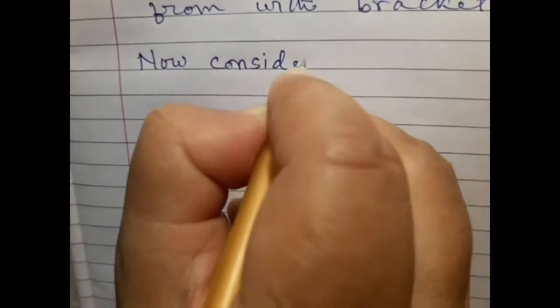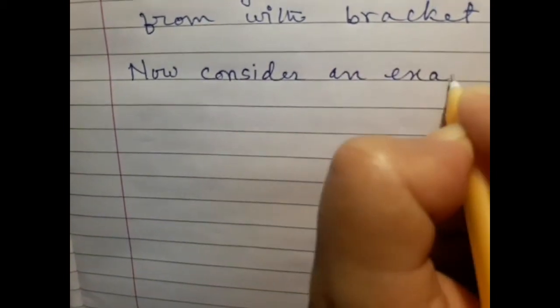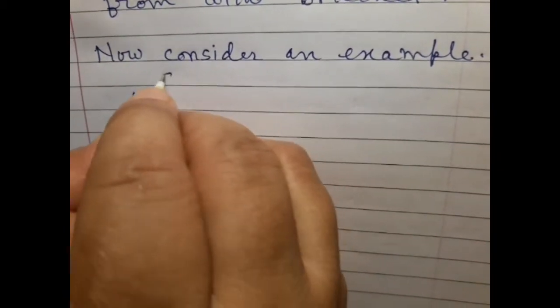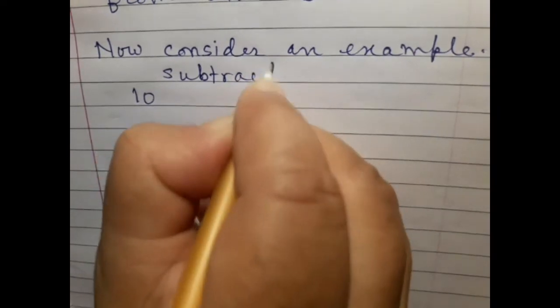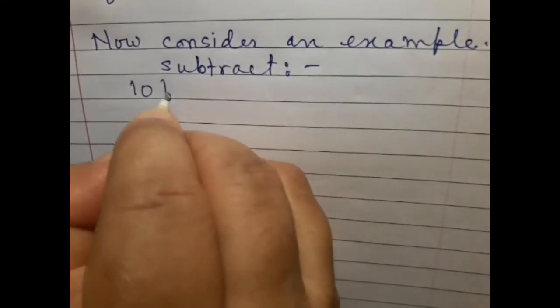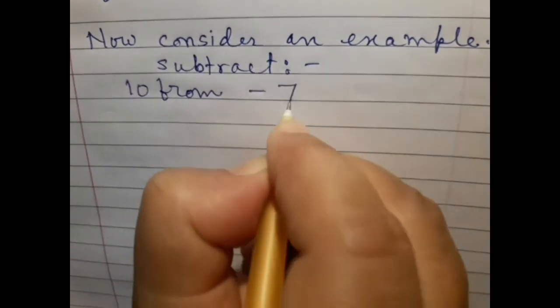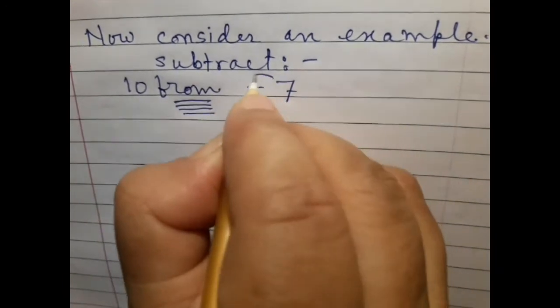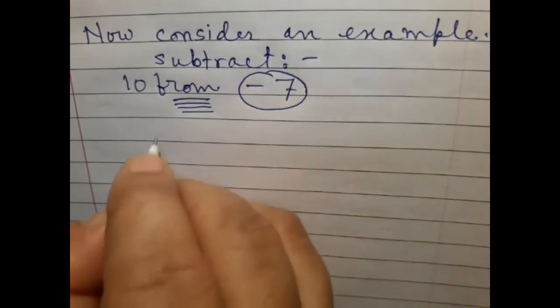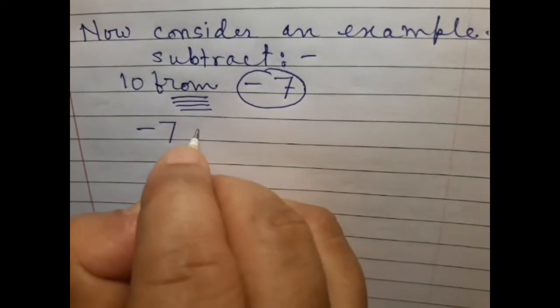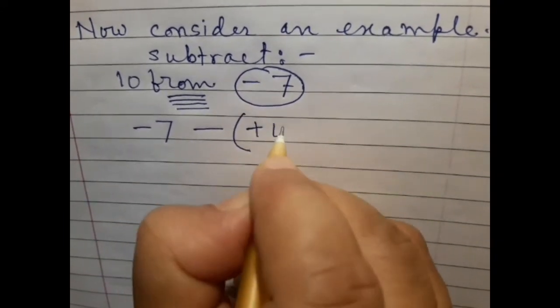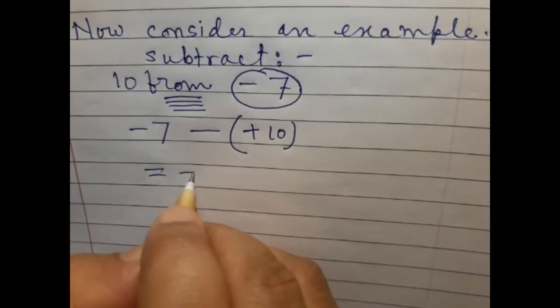Now consider an example. Subtract 10 from minus 7. Here the word from after the digit, that is minus 7. Then put minus, then bracket, then plus 10. What will we write? Minus 7.